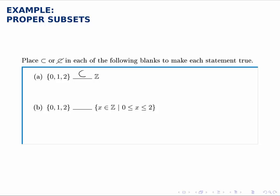On the other hand, in part b, the two sets are equal: 0, 1, and 2. That's all of the integers that are greater than or equal to 0 and less than or equal to 2.